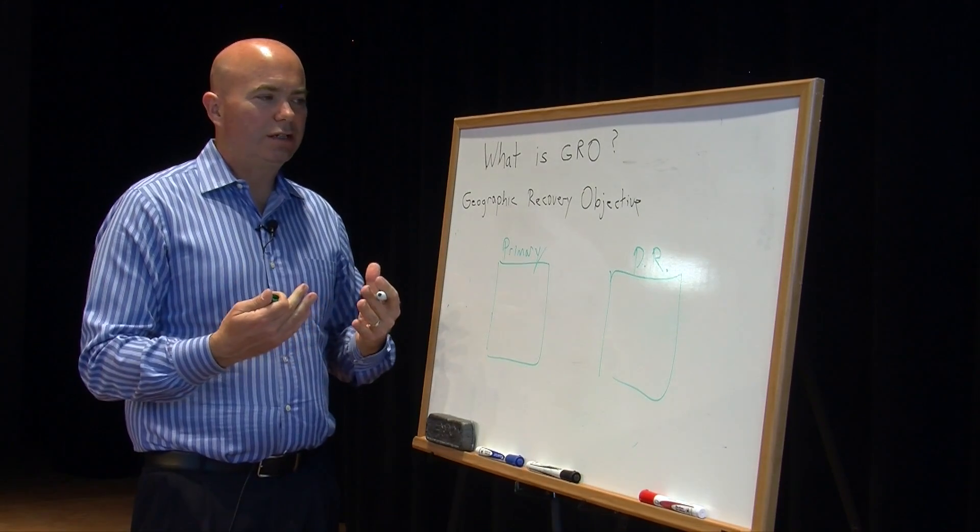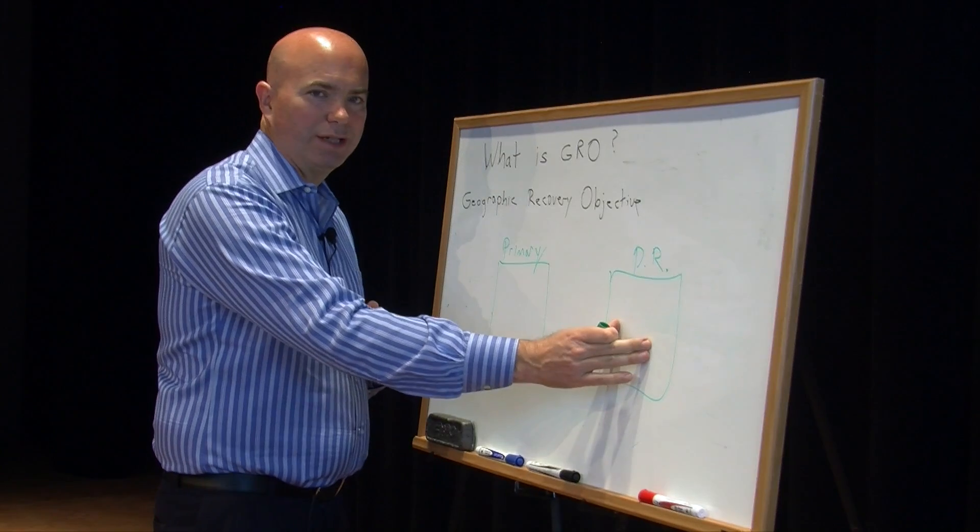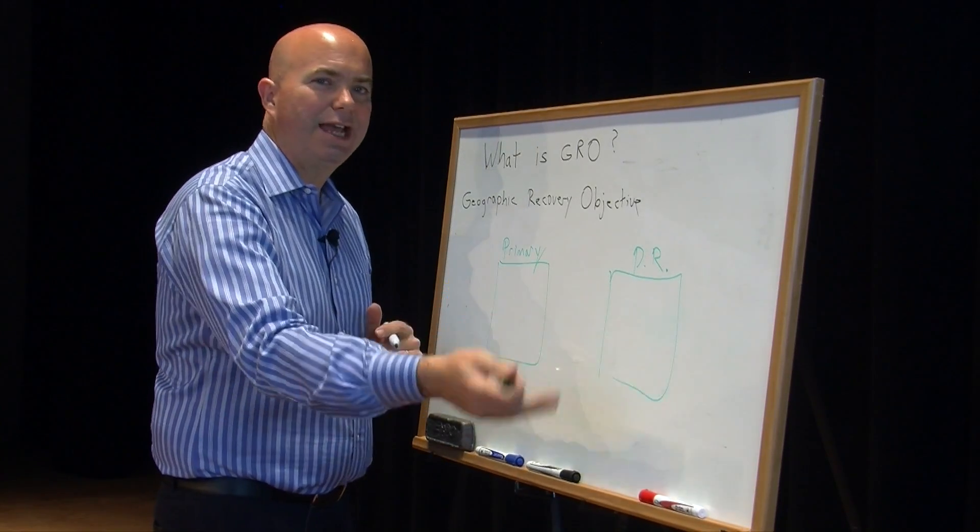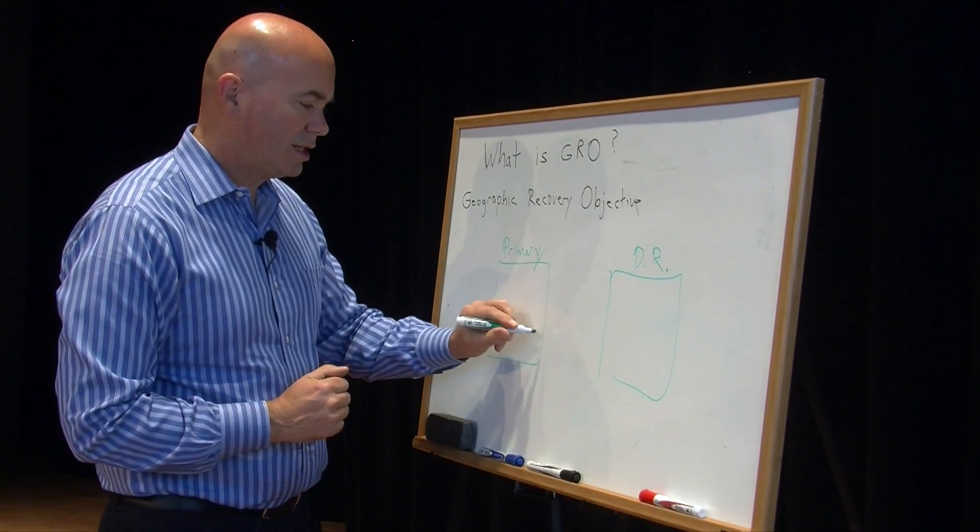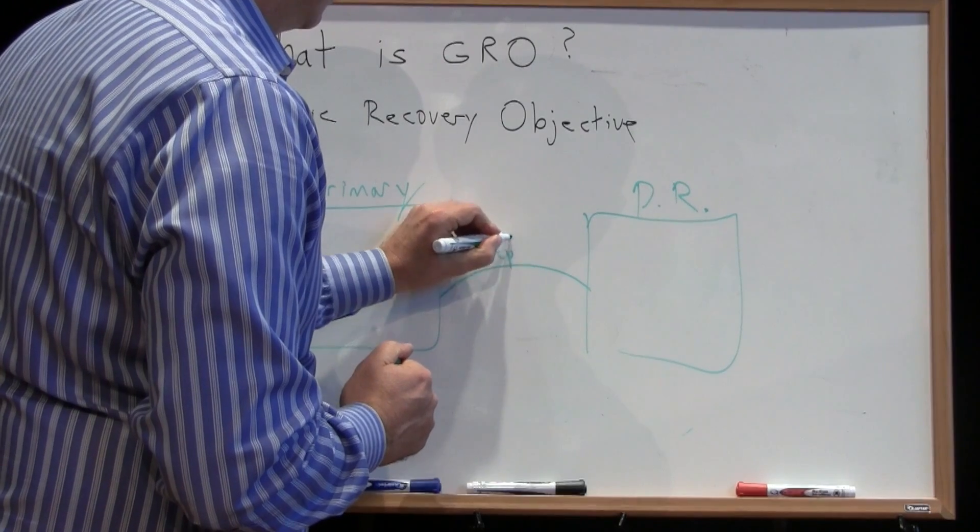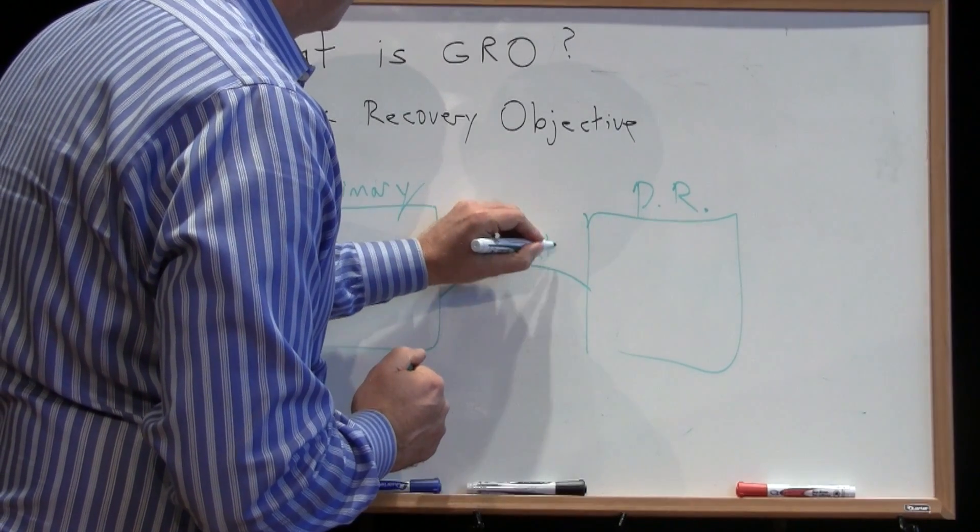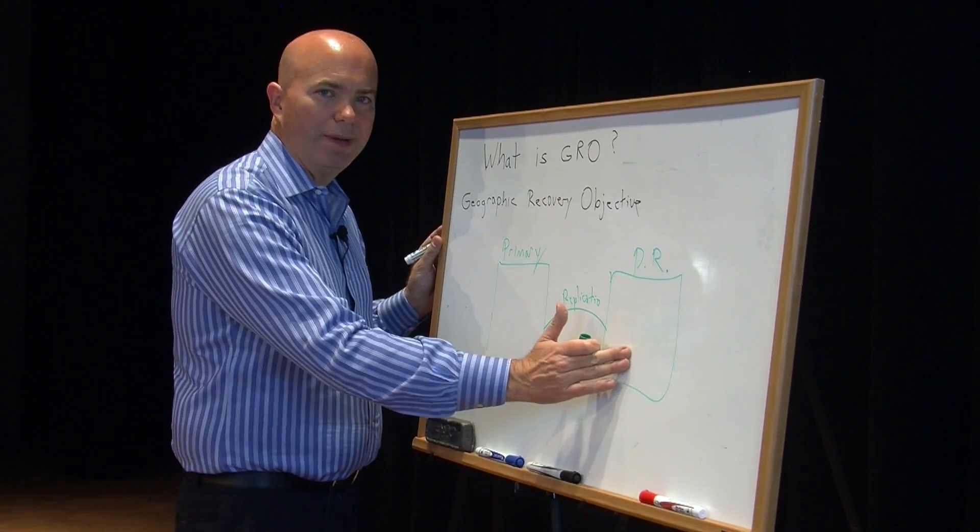If I have a Geographic Recovery Objective of being up and running in my DR site, let's say in eight hours of losing my Primary site, then what I might do is just have replication running between the two locations. So basically, as things are changing here, I'm making a copy over here.